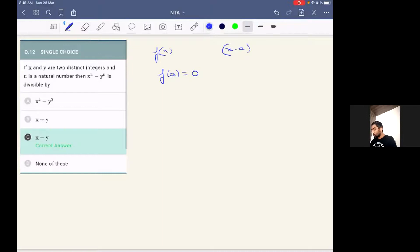If we look carefully at option number C, we can see we have x minus y. So we can say that x^n minus y^n will be divided by x minus y if instead of x we substitute the value of y, then this expression should come out to be zero. When we put the values, you get y^n minus y^n which obviously is zero.